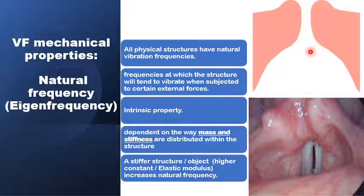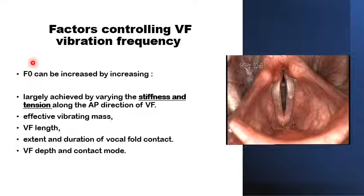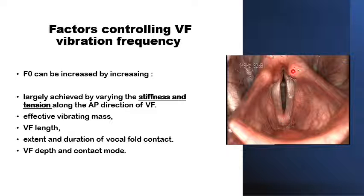Generally speaking, the stiffer a structure is, the higher its elastic modulus is, the higher the natural vibrating frequency is — so it would vibrate at a higher natural vibrating frequency. Several factors contribute in the adjustment and modulation of the vocal fold vibrating frequency. This modulation is largely achieved by the control of the stiffness and the tension in the anteroposterior direction of the vocal folds.